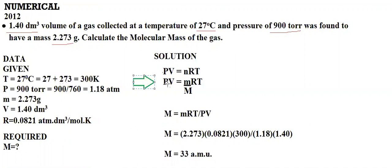The molecular mass went here. PV is divided. We have put mass value as 2.273, R value as 0.0821, temperature as 300 kelvin, divided by pressure 1.18 atm and volume 1.40 dm³. When we put all of them, we got molecular mass 33 a.m.u.